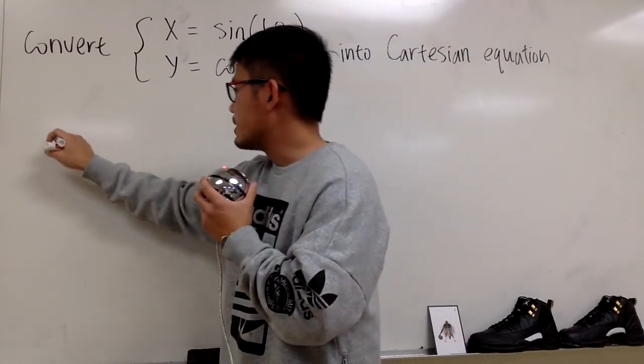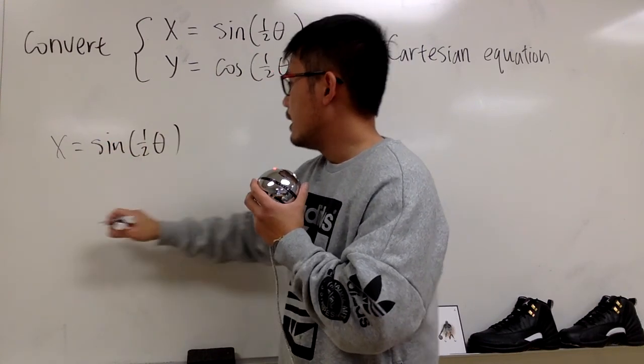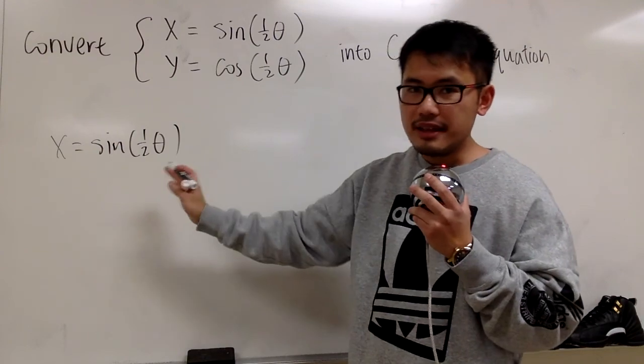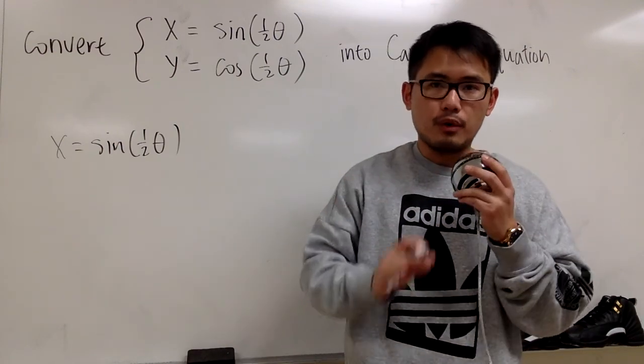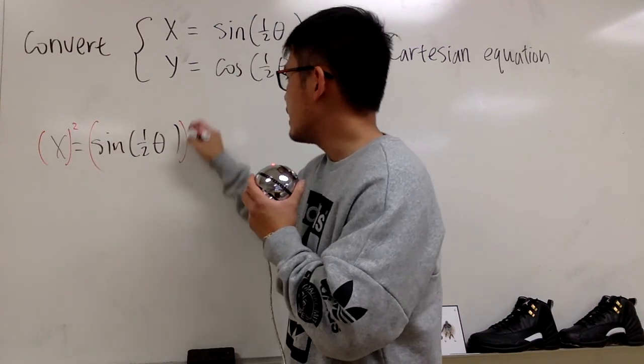Let me write this down for you. x equals sine of one-half theta. We're going to take this equation and square both sides. So I'm going to look at this, square that, and I'm going to look at that, square that.